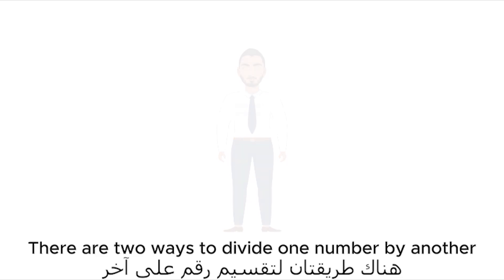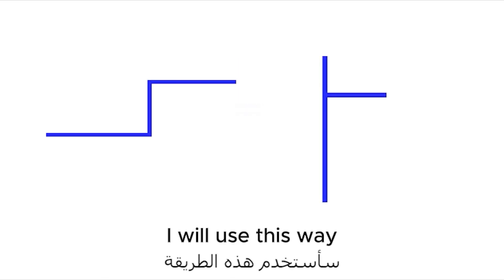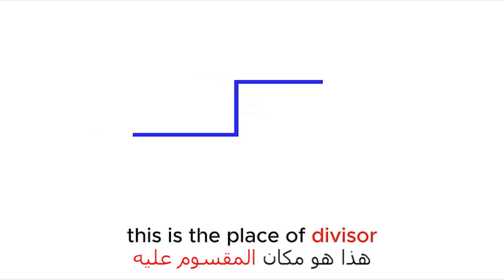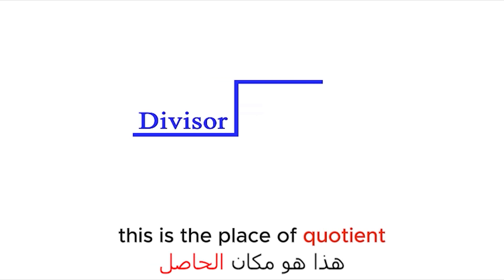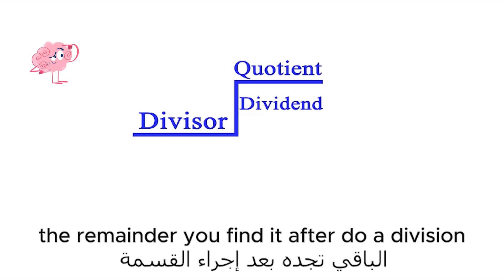There are two ways to divide one number by another. I will use this way. This is the place of the divisor. This is the place of the quotient. This is the place of the dividend. The remainder is found after performing the division.